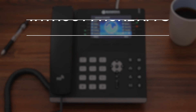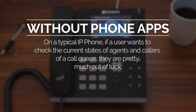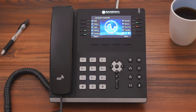Without phone apps, on a typical IP phone, if a user wants to check the current states of agents and callers of a call queue, they're pretty much out of luck. But with the Cues application, managers can easily view information such as callers waiting, hold time, agents logged in, and even control their states, all by navigating the phone's display.